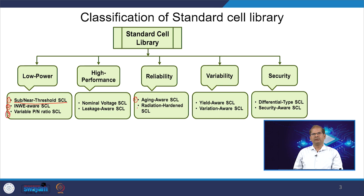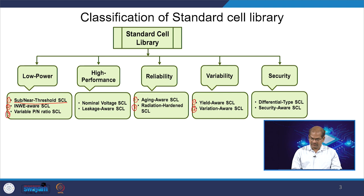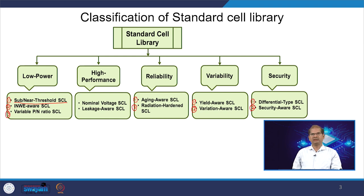For satellite communication applications, we look for radiation-hardened standard cell libraries. Considering process variation, we can design yield-aware or variation-aware standard cell libraries. Security is also an important factor — IC piracy is increasing, so we should have differential-type or security-aware standard cell libraries. These represent different varieties of standard cell libraries, and we can create many more depending on the application.